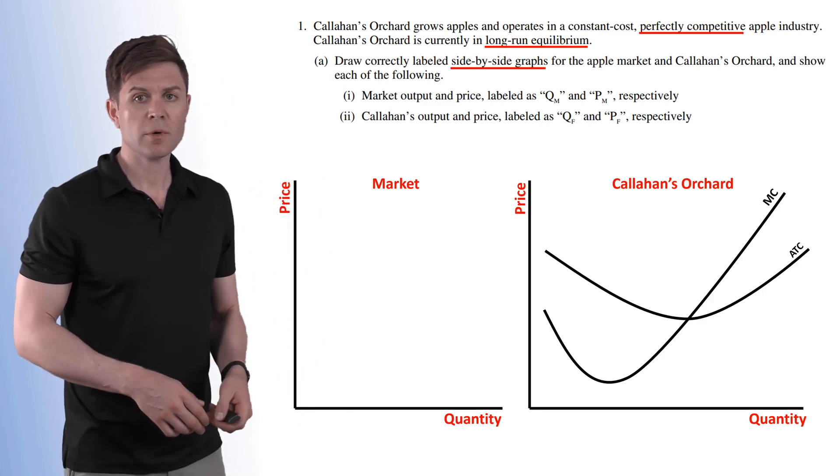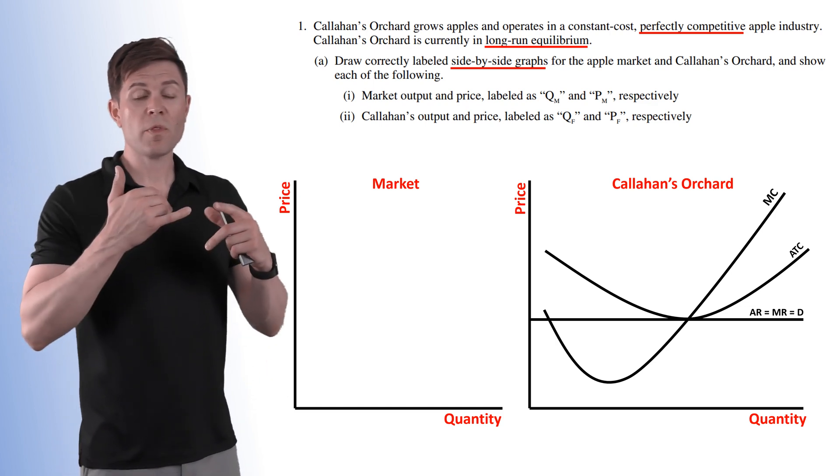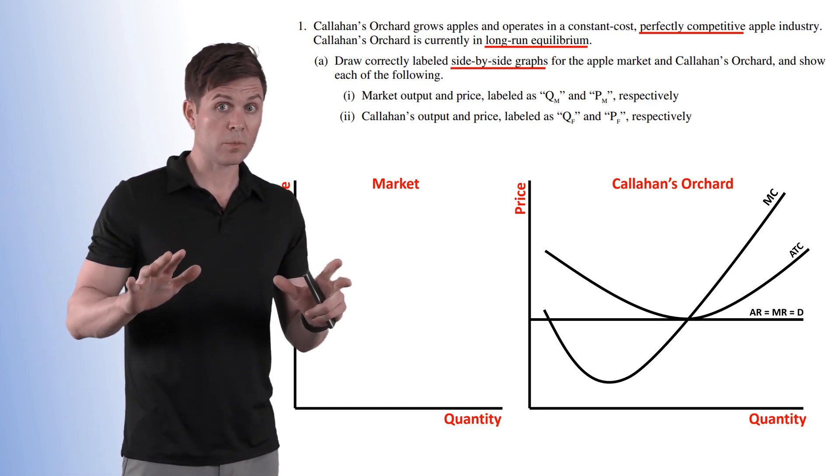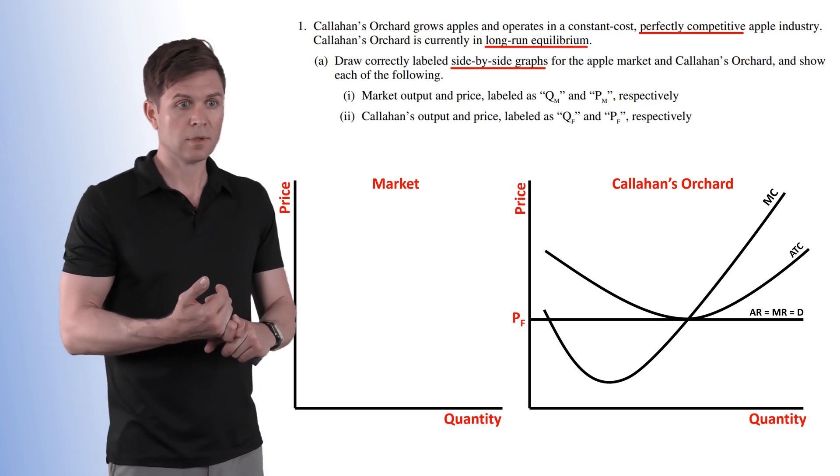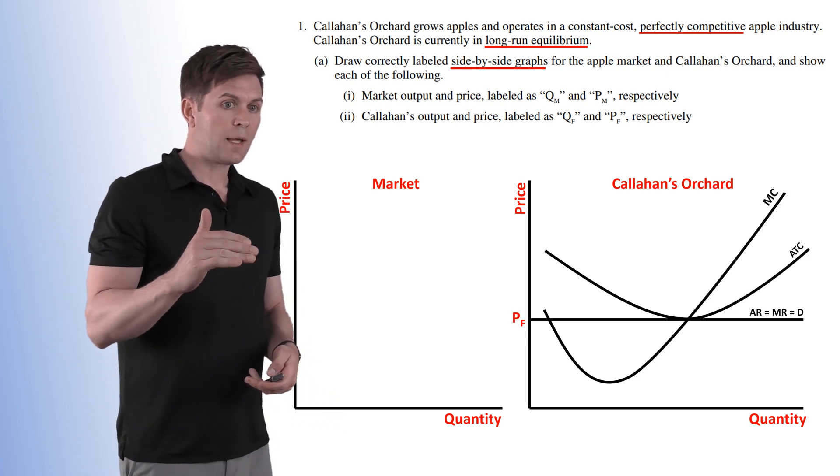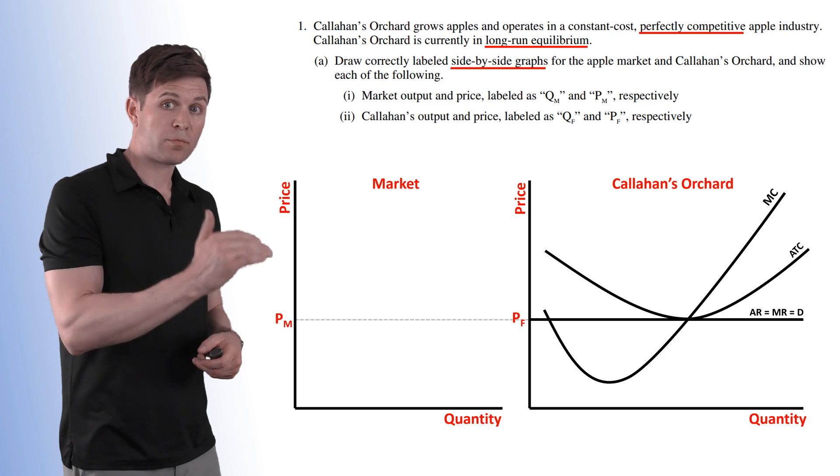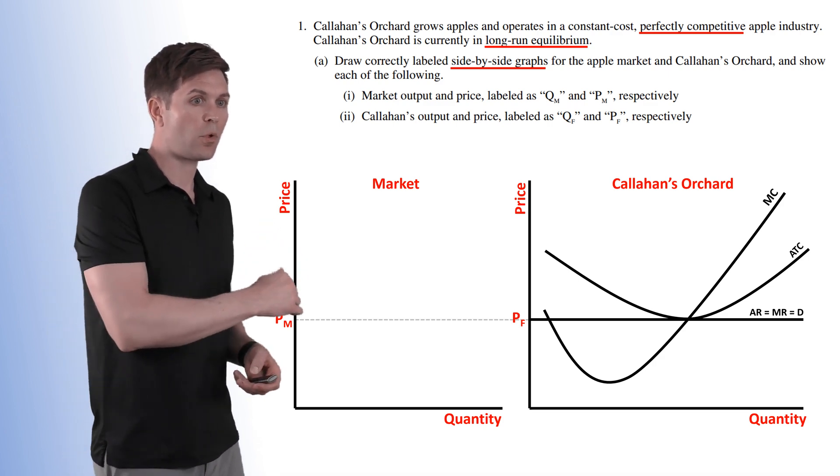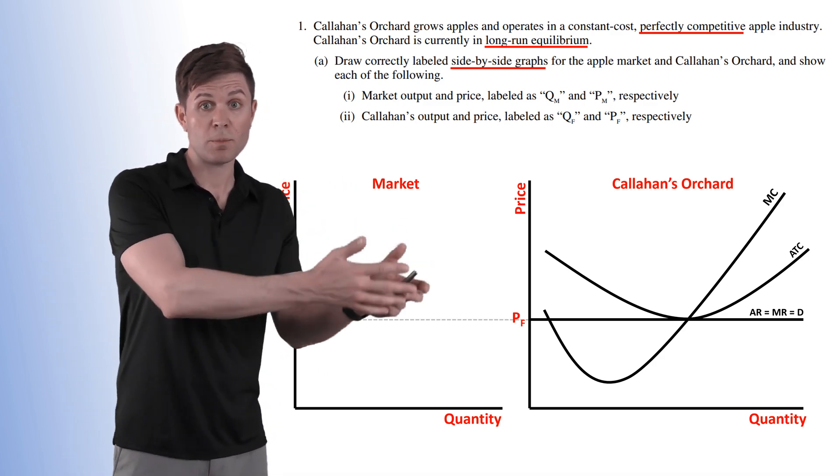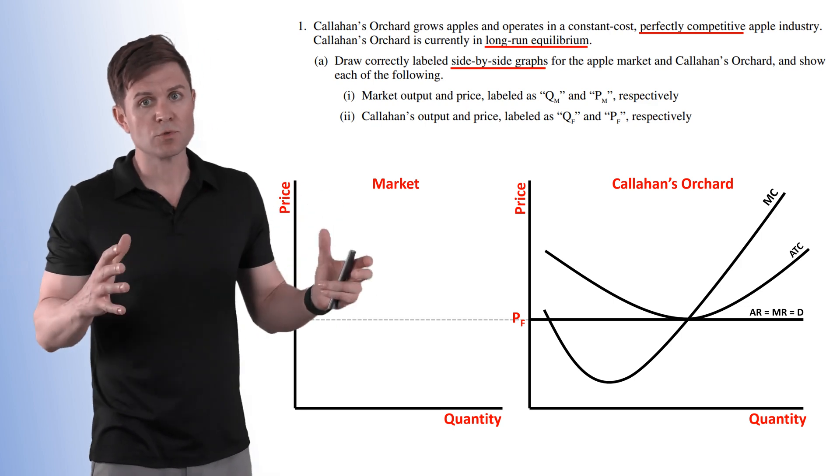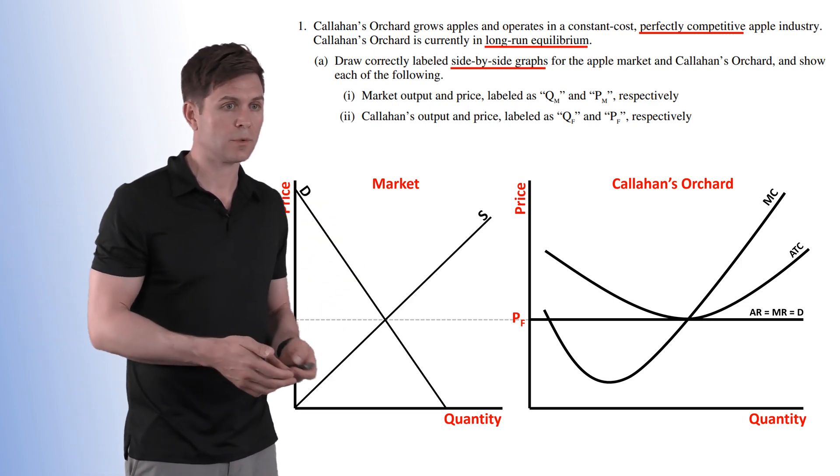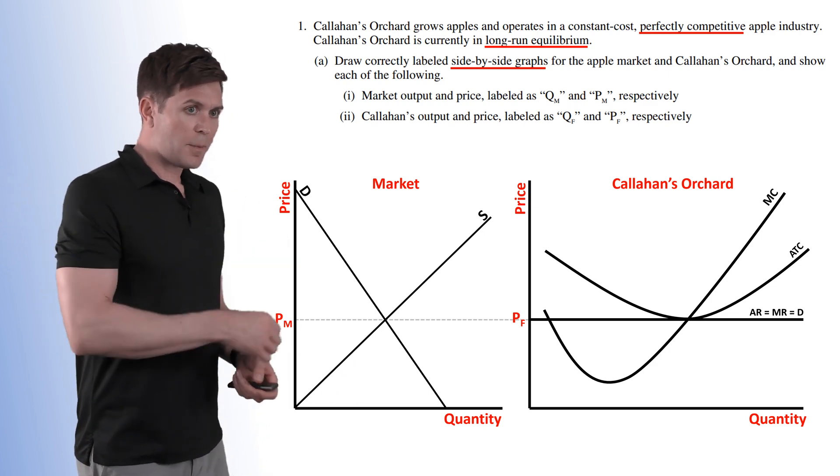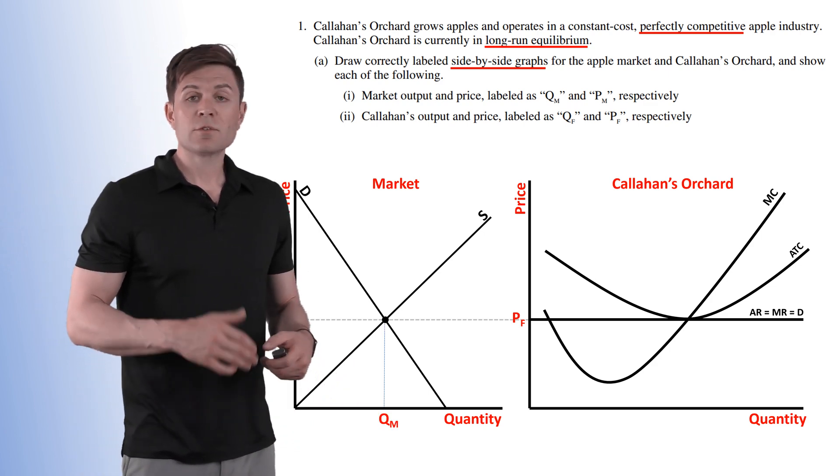So start with your MC curve, throw your ATC in there. We know that we are going to be producing because it's long-run equilibrium where MC equals ATC equals MR. Now we're going to take that marginal revenue, that price the firm is at, and we're going to throw that over to the market. Now the market determines where the firm's at, it's just when we draw this in an FRQ it's nicer to start on that side especially if we know we're in long-run equilibrium.